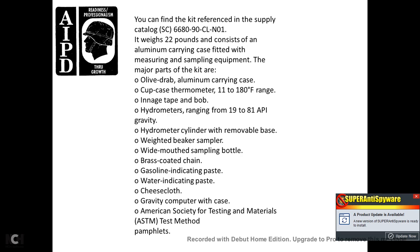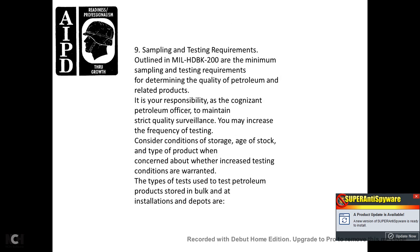The kit is referenced in Supply Catalog 6680-90-CL-901; it weighs 22 pounds and comes in an aluminum carrying case fitted with measuring and sampling equipment. Major kit components include: olive drab aluminum carrying case, cup case thermometer (range 11 to 180 degrees Fahrenheit), ingage tape and bob, hydrometers ranging from 19 to 81 API gravity, hydrometer cylinder with removable base, weighted beaker sampler, wide-mouth sample bottle, brass-coated chain, gasoline indicating paste, water indicating paste, cheesecloth, and a gravity computer with case.